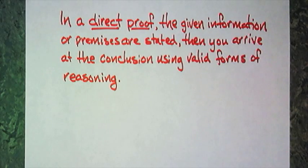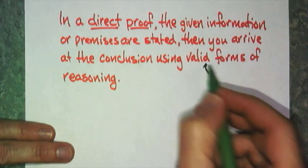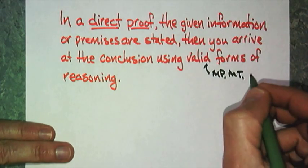Today we are talking about proofs, and we are going to begin with a direct proof. I'll start with the definition: In a direct proof, the given information or premises are stated, then you arrive at the conclusion using valid forms of reasoning. Those valid forms of reasoning are what we've been studying - that's the modus ponens, modus tollens, and law of contrapositive.